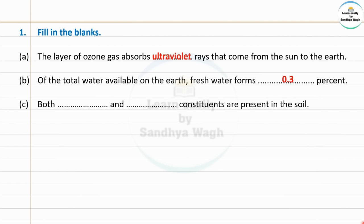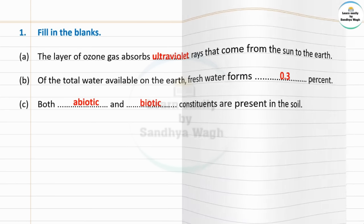Next: Both dash and dash constituents are present in the soil. The answer is: abiotic and biotic constituents are present in the soil.